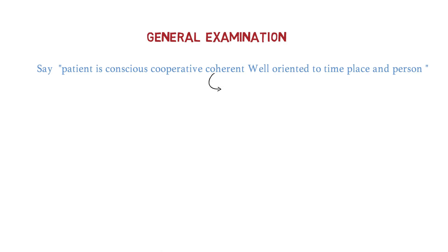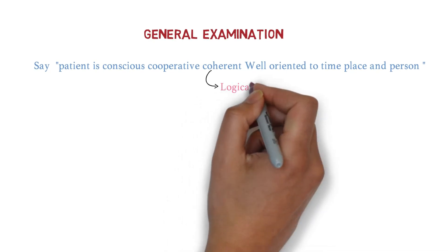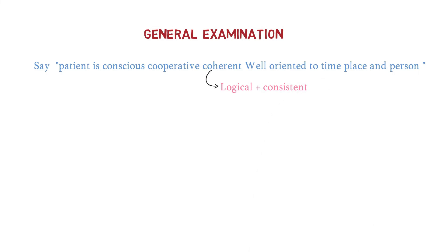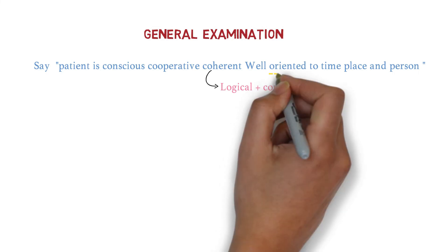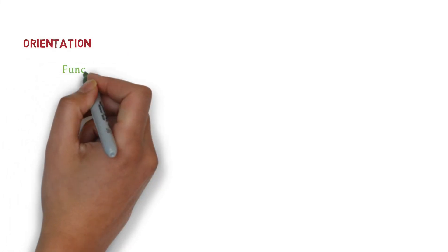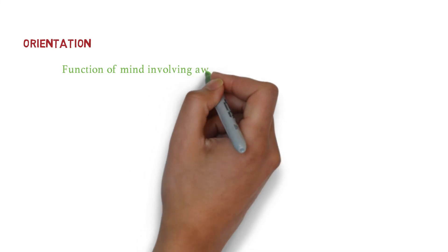We say the patient is conscious, cooperative, coherent, and well-oriented to time, place, and person. Coherent means the patient is speaking logically and consistently. Oriented means the function of mind involving awareness of three dimensions: time, place, and person.